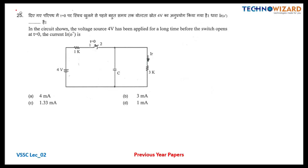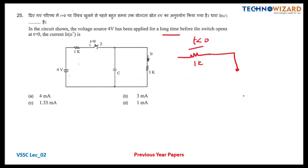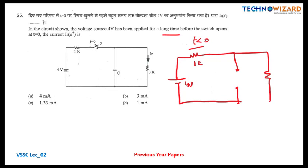Question number 25 is based upon transients. The circuit has a 4 volt voltage source applied for a long time before the switch opens. That means at T less than zero, the switch is closed. Redrawing the circuit: at steady state, the capacitor acts as an open circuit. So we have 4 volts with 1K and 3K ohm resistors. This is the IR current node.